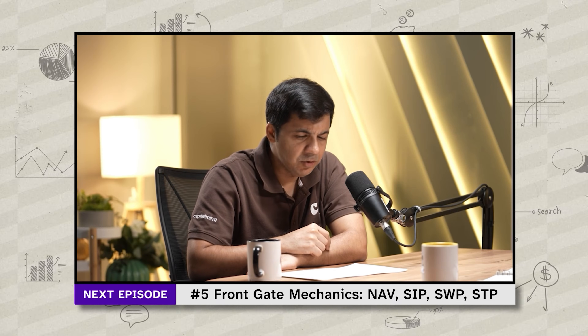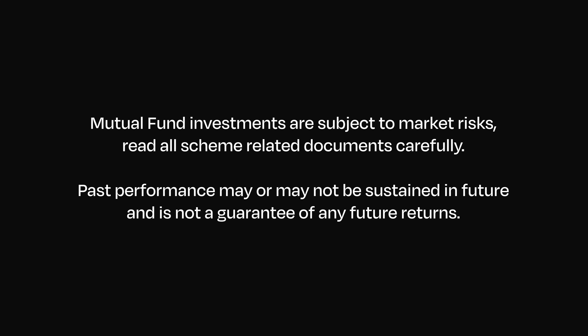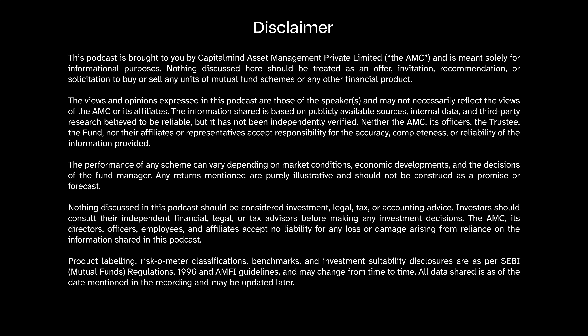To buy a mutual fund, go to an AMC website, search your fund, and click invest now. Other options include an RTA website or online platforms such as MF Utilities, MF Central, Dhan, Zerodha Coin, Paytm, or ING Money. Regarding NAV timing: for overnight and liquid fund categories, money must reach the AMC's bank account before 1:30 PM; for all other categories, the cutoff is 3 PM. Mutual fund investments are subject to market risks. Read all scheme-related documents carefully.